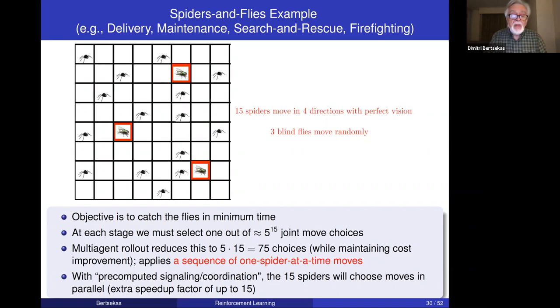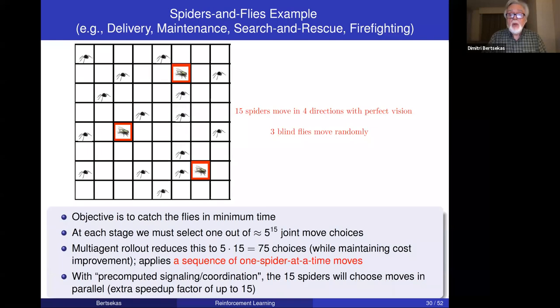We also gave examples of precomputed signaling implying coordination between spiders, allowing the 15 spiders to choose moves in parallel while guessing what the others will do. This can speed up computation by a factor of up to 15. Using signaling information may somewhat deteriorate overall performance, but you gain a lot in terms of computation speed-up.